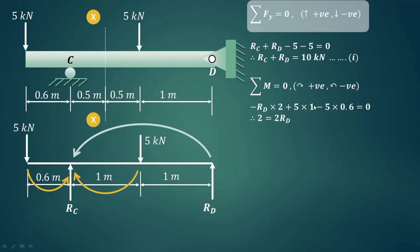Now 5 into 1 minus 5 into 0.6, that value comes out to be 2 kN meter minus Rd into 2. That we have transferred on the other side so it is 2 Rd, so 2 upon 2 that is 1. So value of reaction at D is 1 kN.